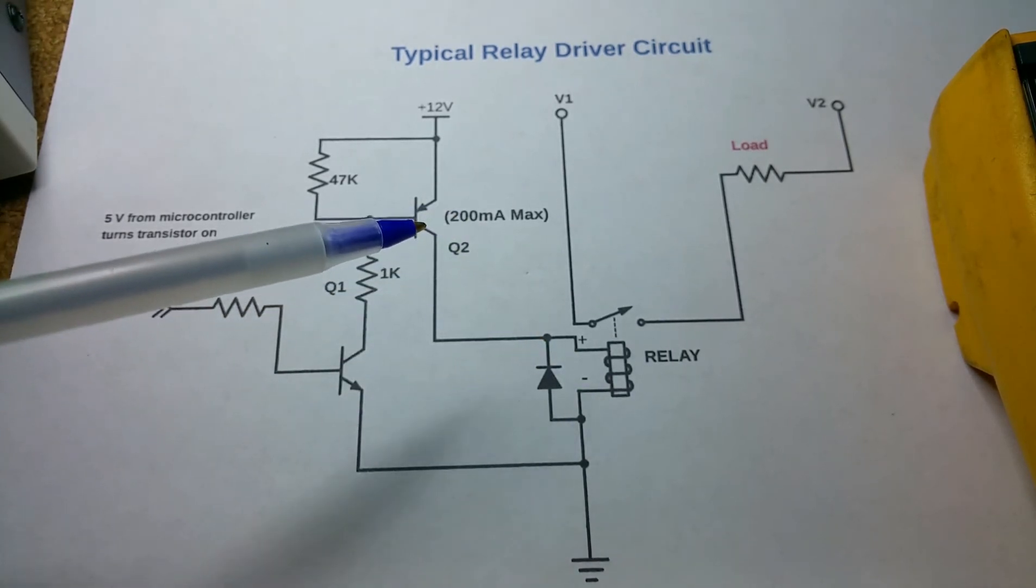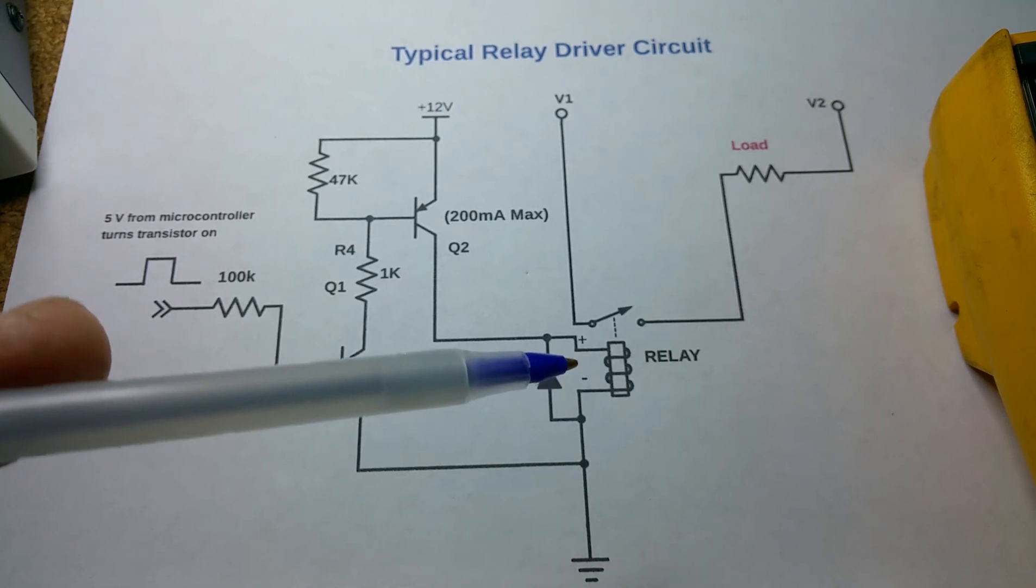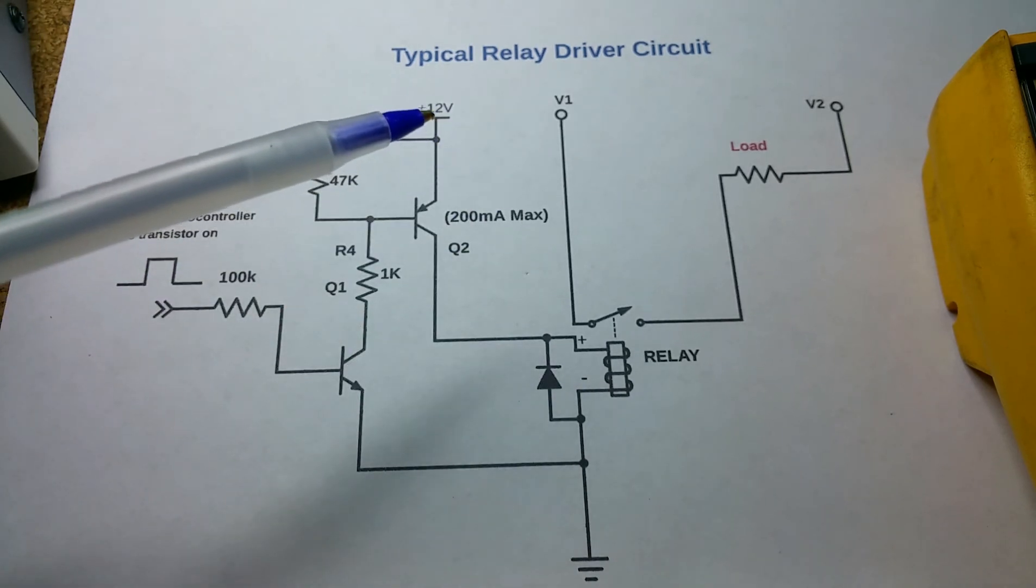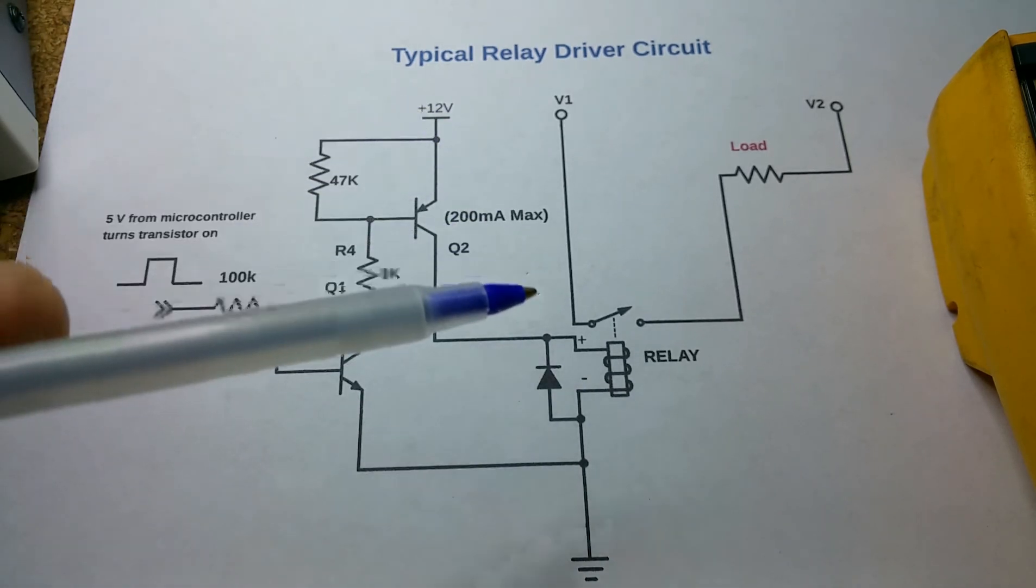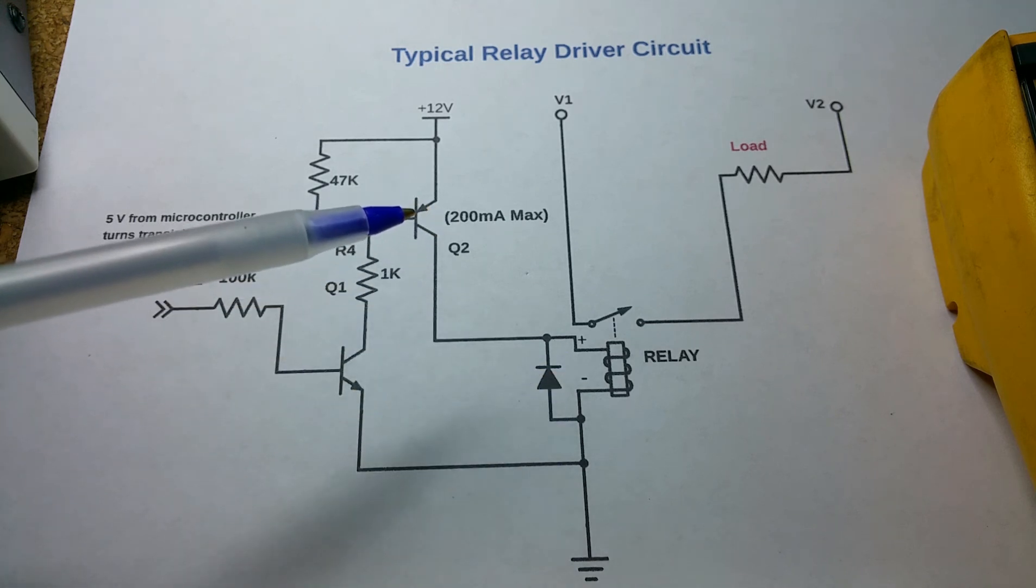Now if you take a relay and replace it with one that has a 60 ohm coil resistance—which probably won't realistically happen because that's pretty low, but just for example—if you put one in there that had 60 ohms and you've got 12 volts, now you've got this circuit supplying 200 milliamps, which is right on the edge of what this transistor can do.